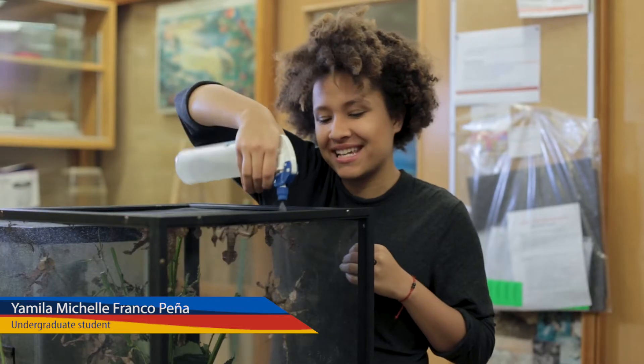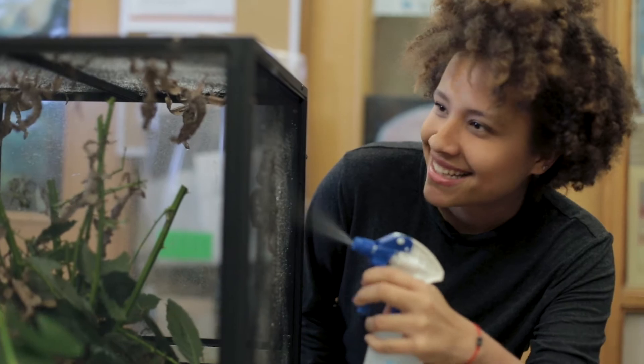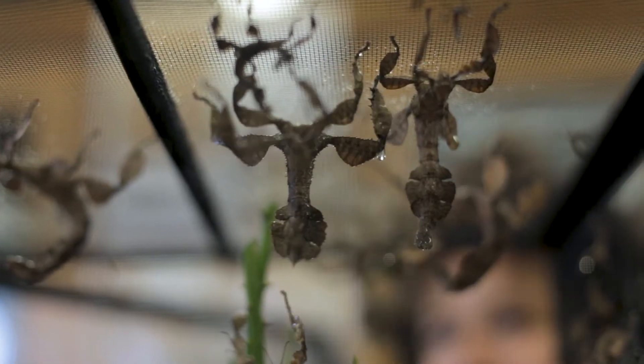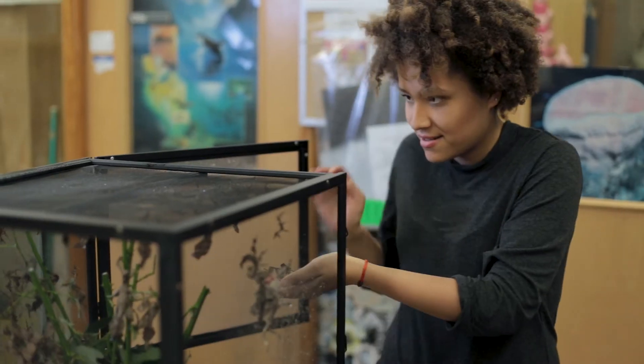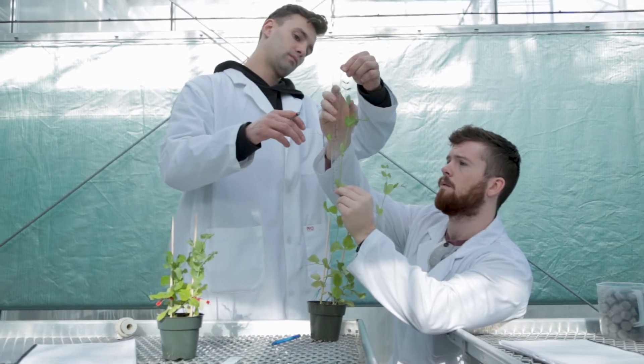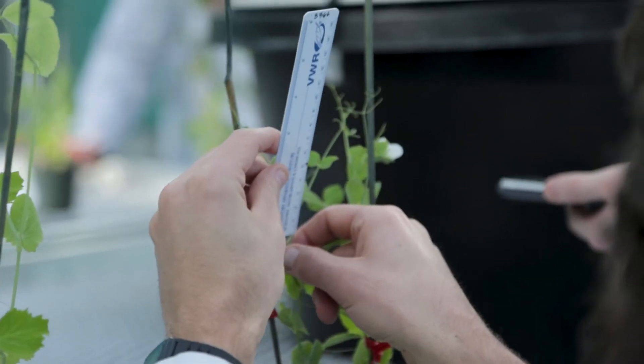I think that studying biology as an academic discipline is important because biology itself answers a lot of questions like how do things work in the world. For instance, I'm really interested in agriculture within the field and biological pest control because where I come from those are challenges that we have a lot of agricultural pests.